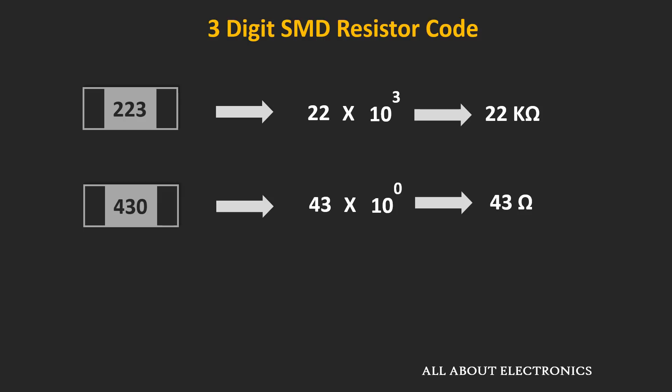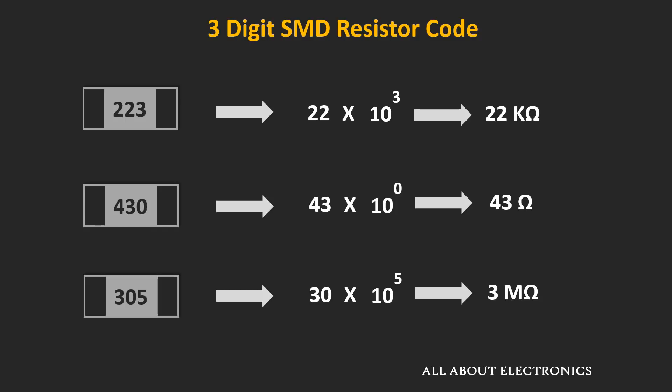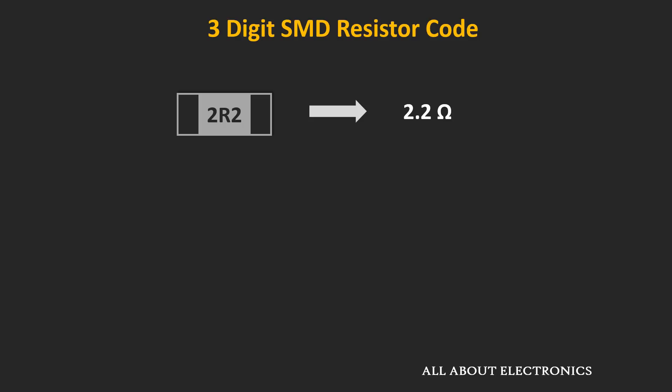Similarly, for the code 430, the value of the resistor would be 43 × 10⁰, which equals 43 Ω. And if the code written on the resistor is 305, the value would be 30 × 10⁵, which equals 3 MΩ.